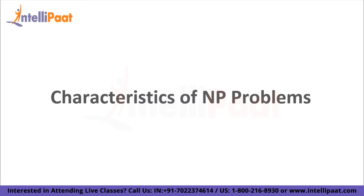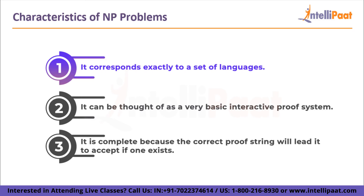Next we have characteristics of NP problems. NP corresponds exactly to the set of languages definable by existential second-order logic in terms of descriptive complexity theory. NP can also be thought of as a very basic interactive proof system in which the prover generates the proof certificate and the verifier is a deterministic polynomial time machine that verifies it. It is complete because a correct proof string will lead it to accept if one exists, and it is sound since the verifier will refuse to accept if no acceptable proof string exists.